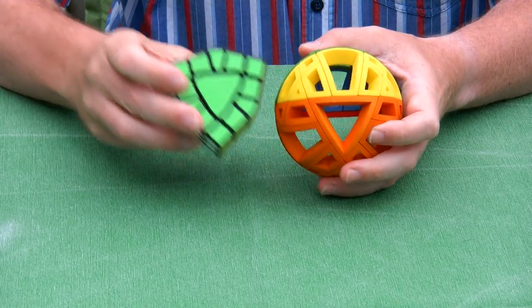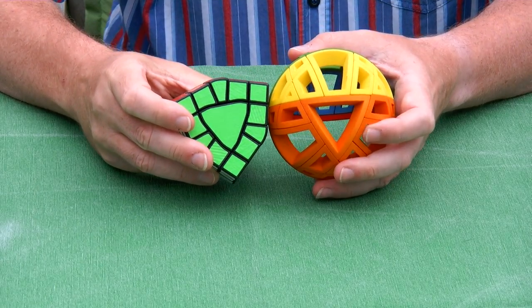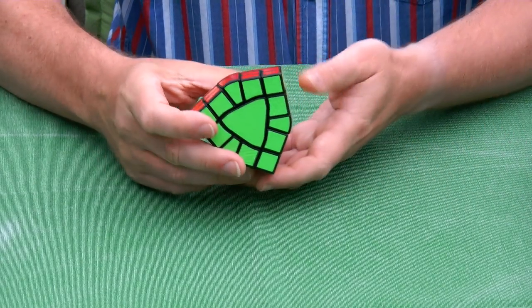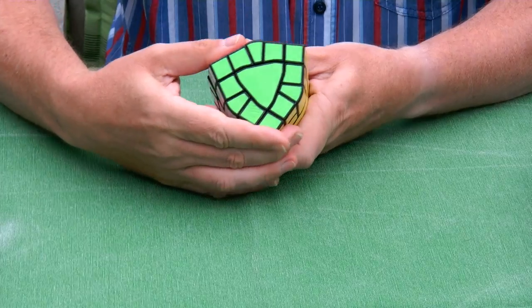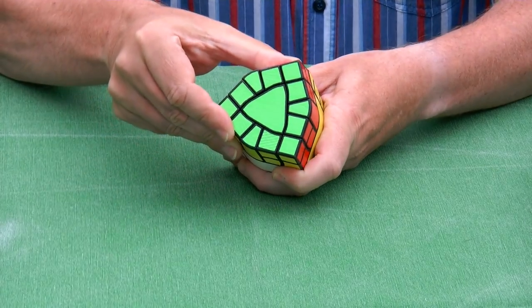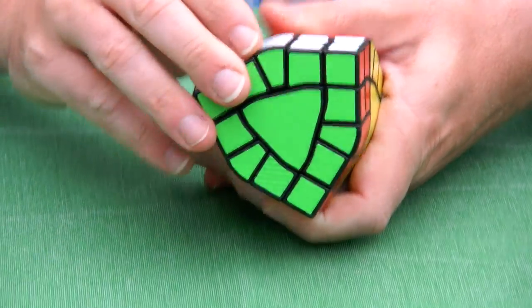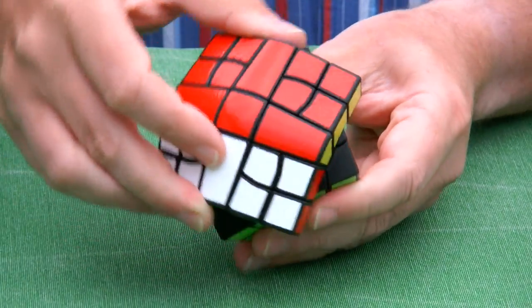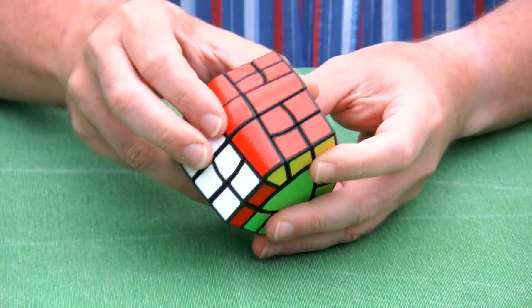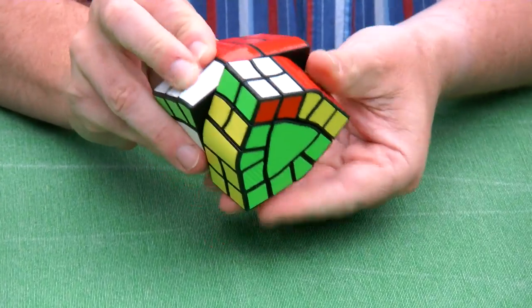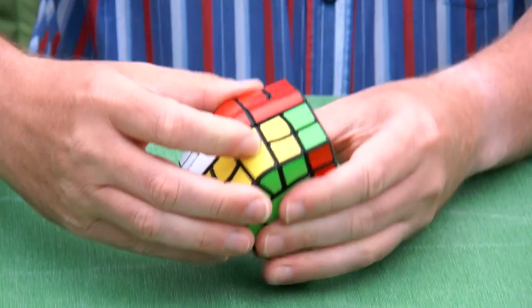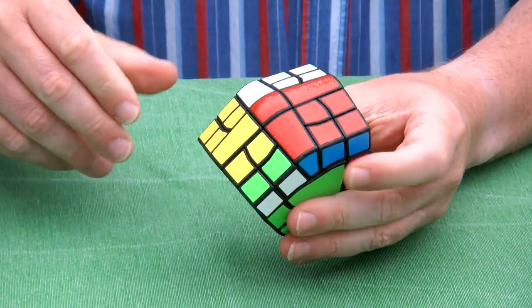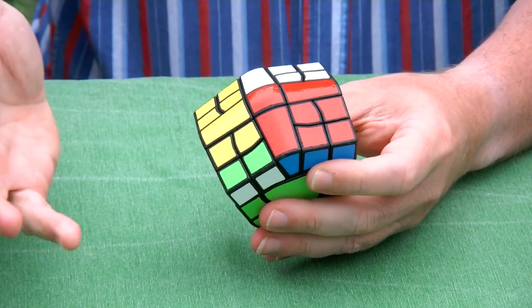And of course, this twisty puzzle twists like any twisty puzzle. You turn either around its threefold axis or around its fourfold axis. So again, the threefold axis. Again, the fourfold axis. And as you see, it gets quickly scrambled.